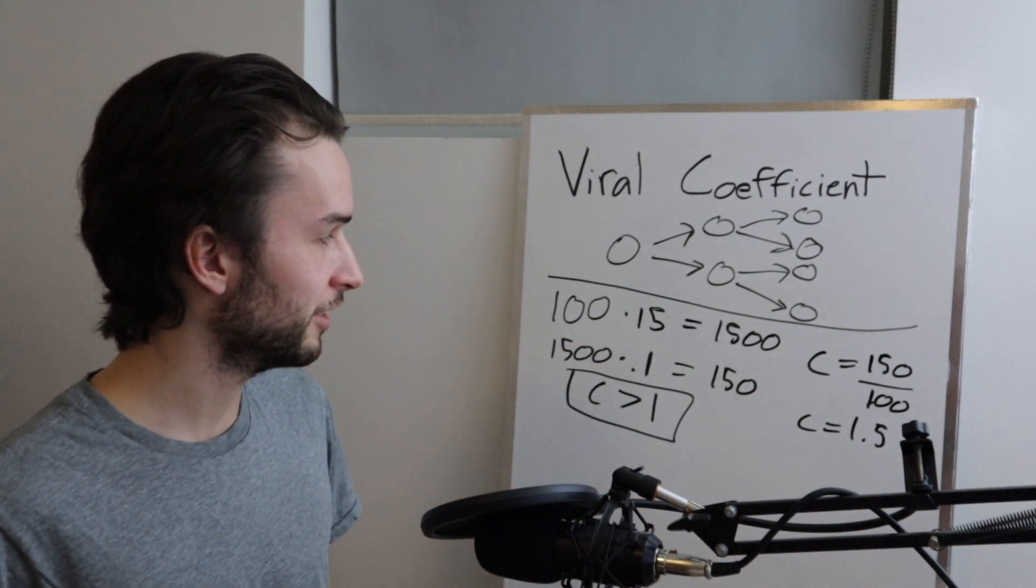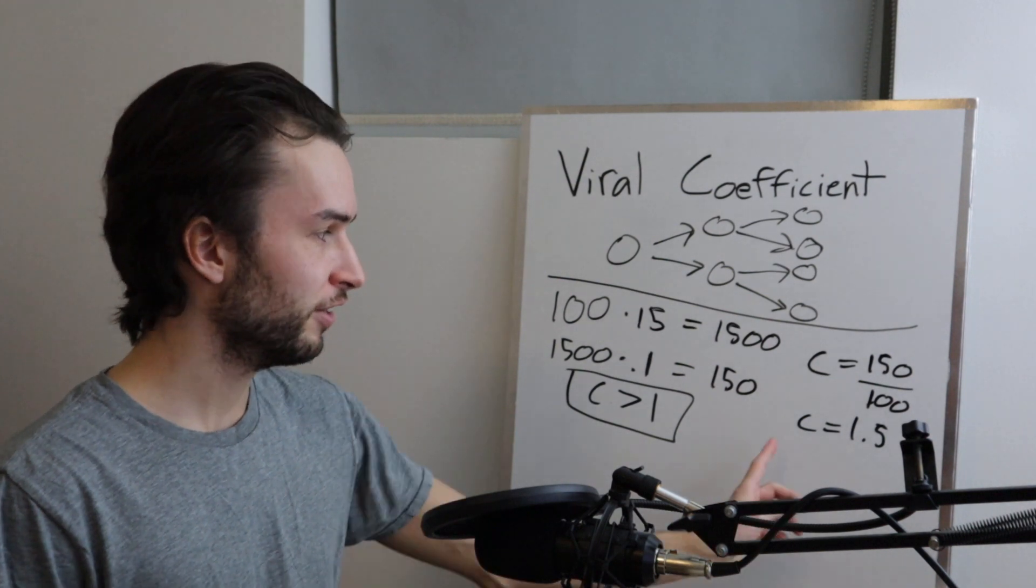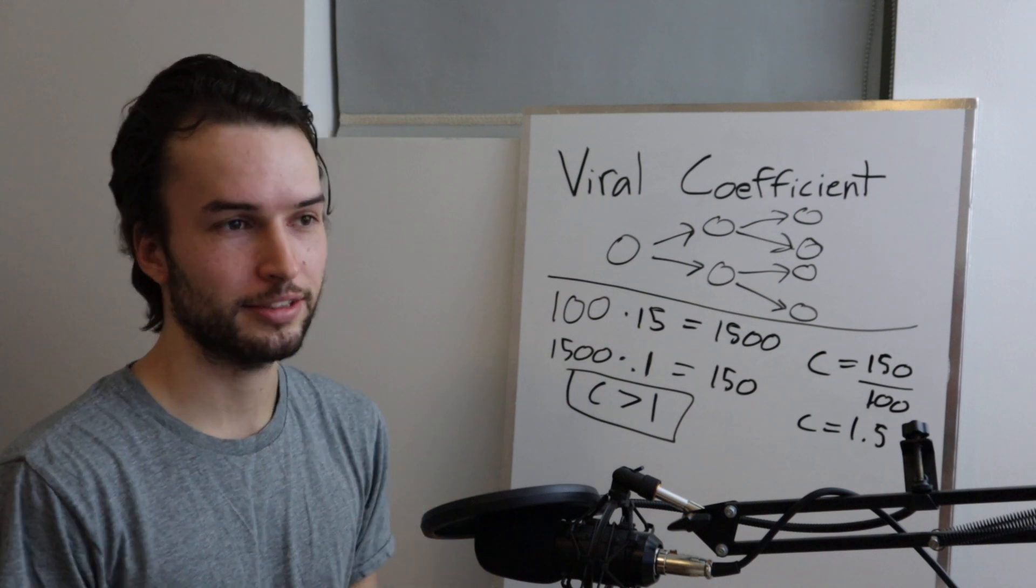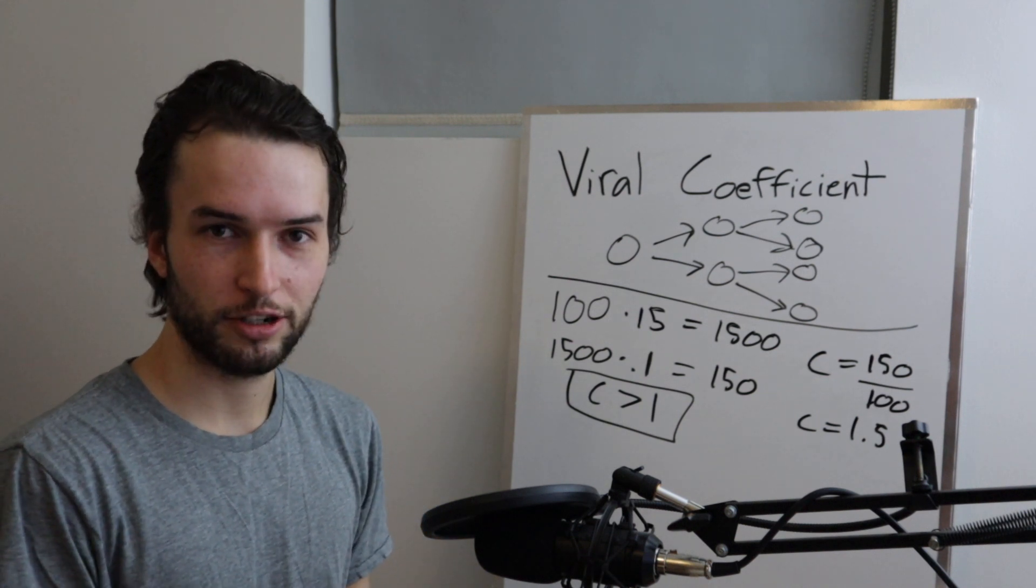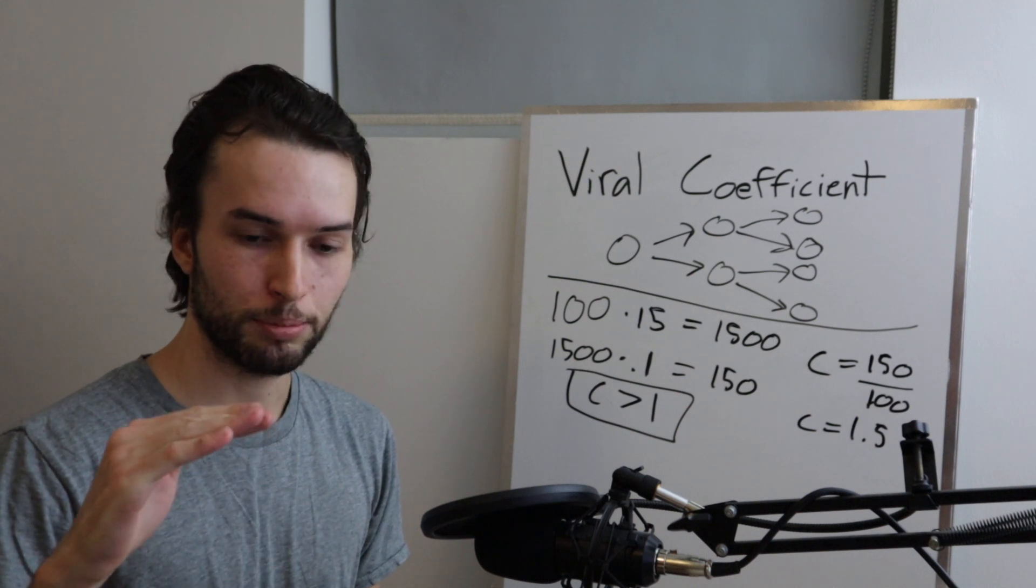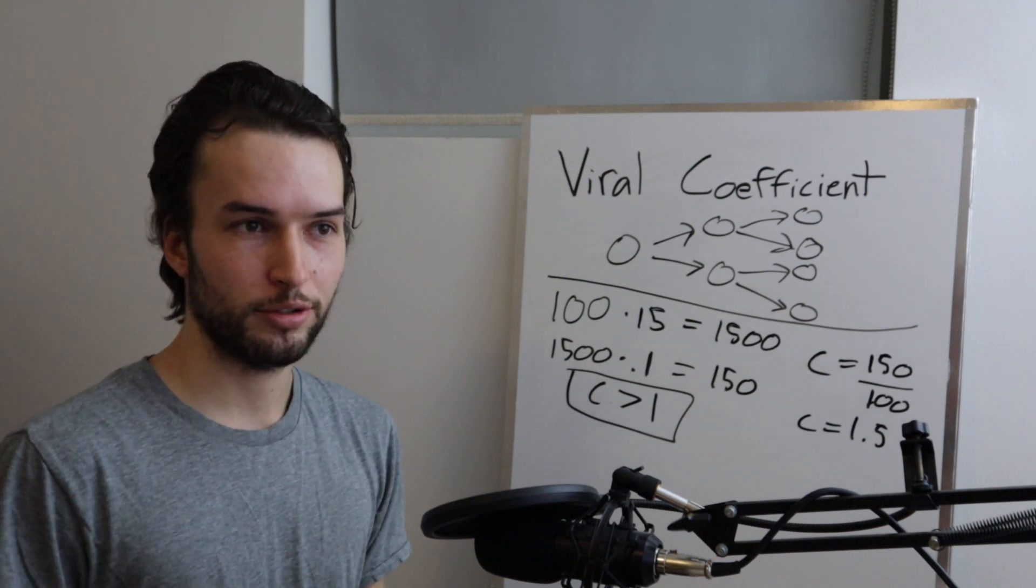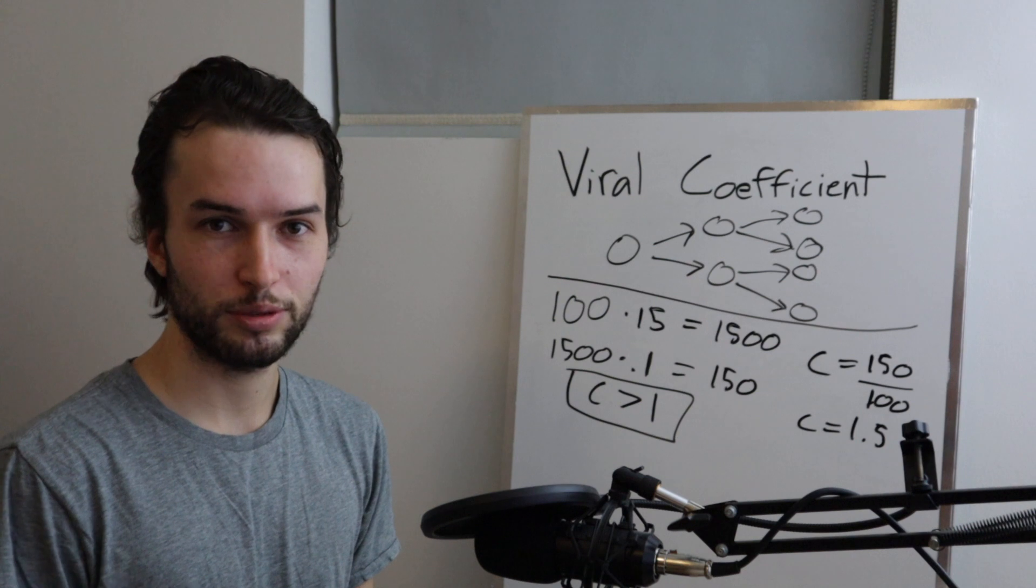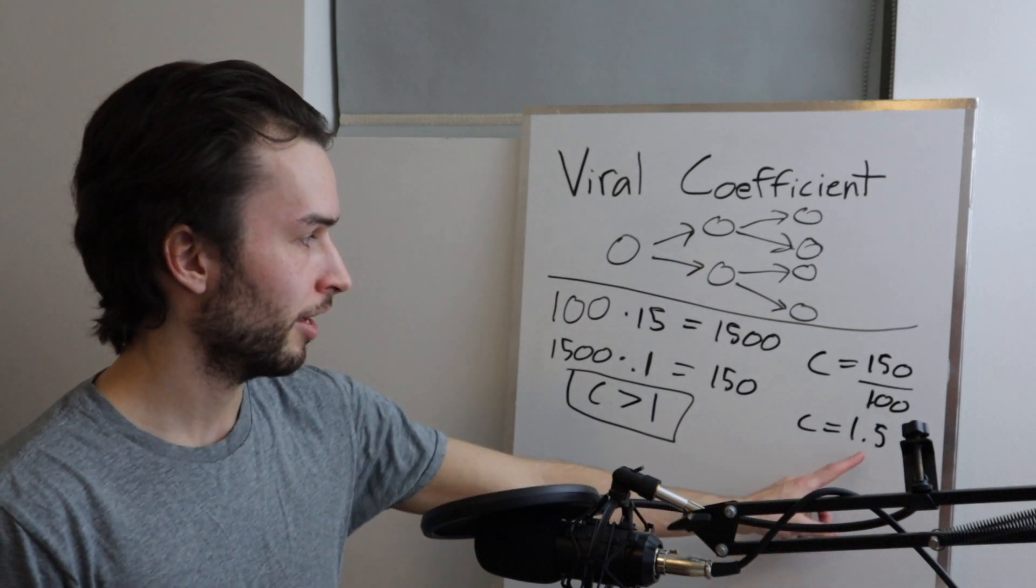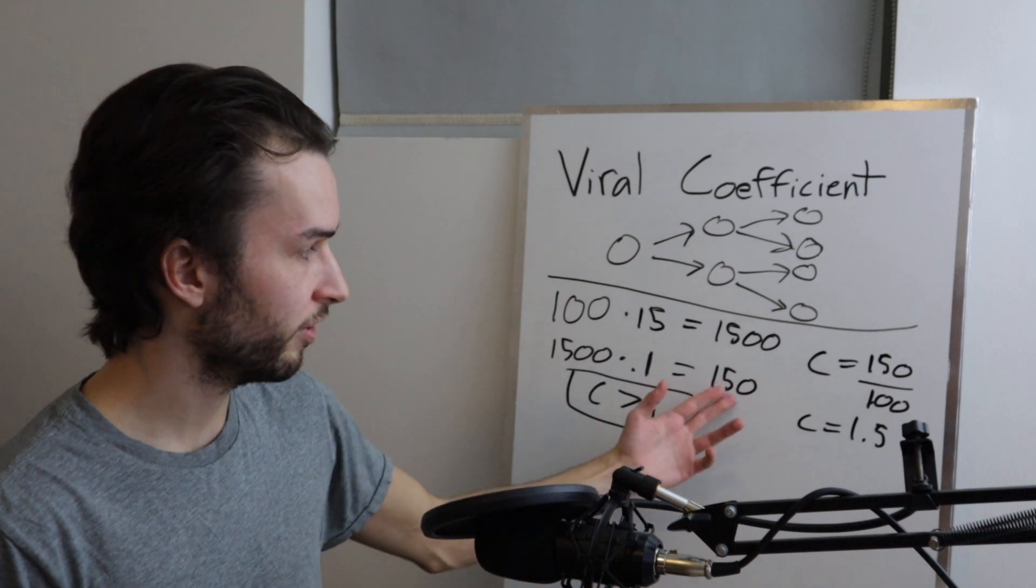Otherwise this thing would really explode and you would get tons of new users. But still, if you can get C anywhere above one, you're gonna be in the good zone. That's a lot of the success stories I hear about apps. They're just kind of teetering along, and then they have some breakthrough where the user experience becomes good enough to where people are willing to share the app on average in a large enough number of times to get this number above one.